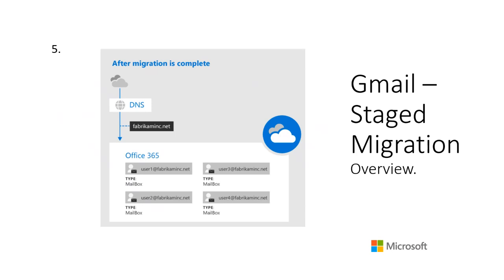In the final step, after migration is completed, the DNS change is made so the MX record now points to Office 365. Any new incoming email will land on Office 365 — this is the desired final state.